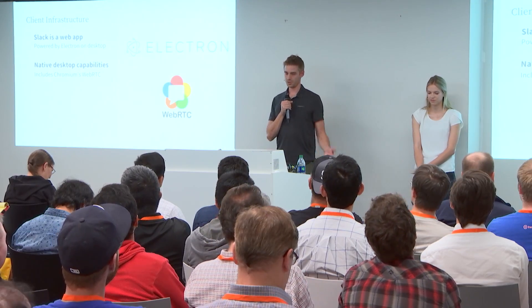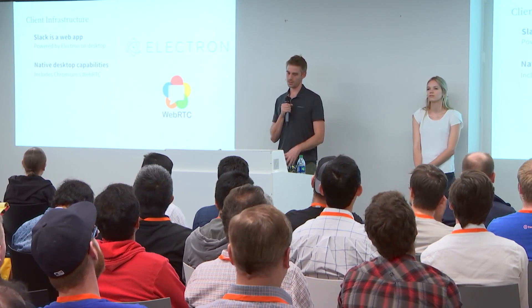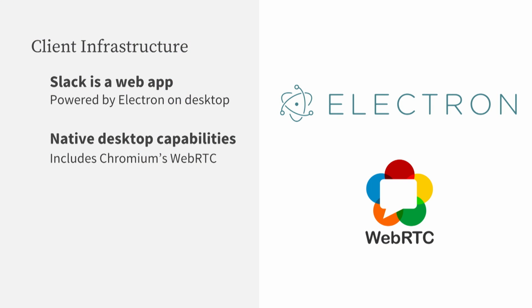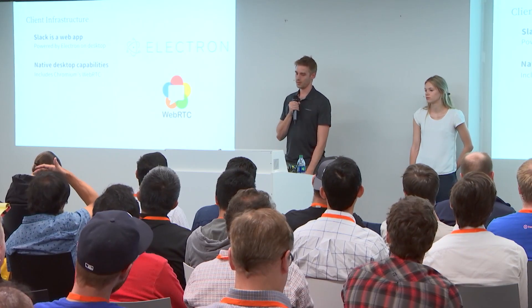I'm going to start talking about the client infrastructure first. As a workspace collaboration app, Slack is focused on desktop platforms more than mobile platforms — we have a lot more usage on desktop. Slack's a web application, but it's also in the somewhat uncommon position of shipping native desktop apps. We do that using a platform called Electron, which is kind of like a stripped-down browser. It actually runs the core parts of Chromium, plus the ability to do additional native-like functionality, either through the Electron API itself or through custom native node modules. Inside Electron, we're using WebRTC.